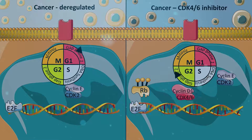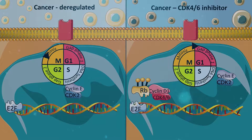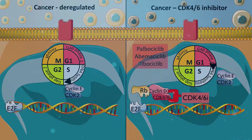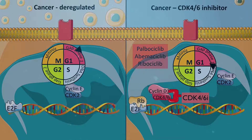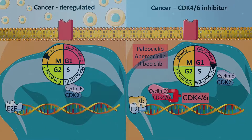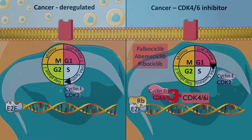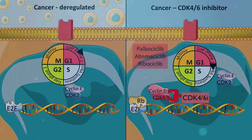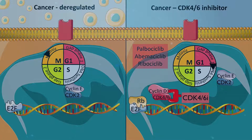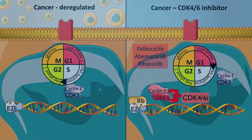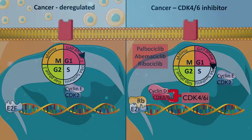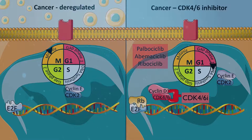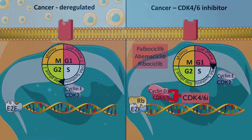CDK4-6 inhibitors are selective ATP inhibitors and inhibit this process by binding to the CDK4-6 cyclin D1 complex, thus preventing phosphorylation and the release of the RB from the E2F-RB complex. This prevents subsequent E2F-mediated DNA synthesis in the S phase of the cell cycle. Hence, cancer cell proliferation is inhibited.